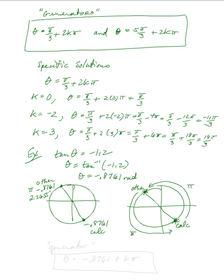So the generator I would write is theta equals negative zero point eight seven six one plus k pi. You start with a solution — in this case the calculator solution — and then add k times the distance between them, which is pi. That's your generator.